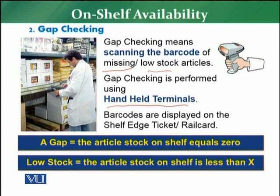So what is a gap? A gap is when the stock of an article on the shelf equals zero — which means there is no stock available. If there is no stock available, you consider it as a gap.